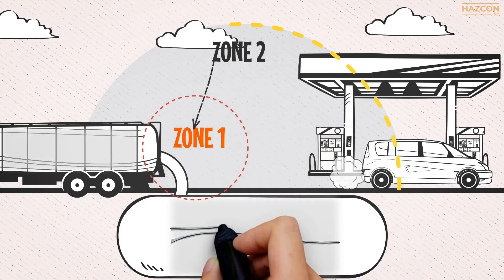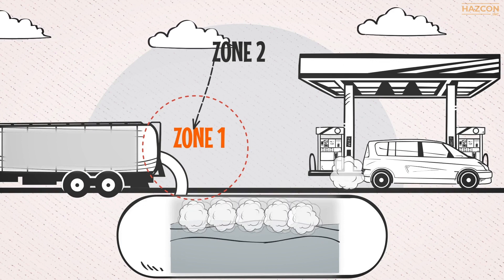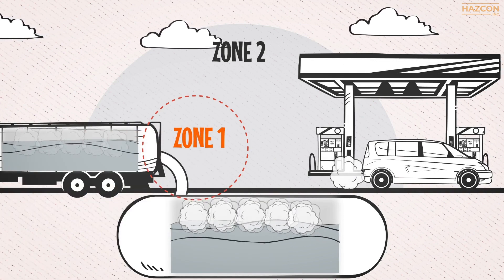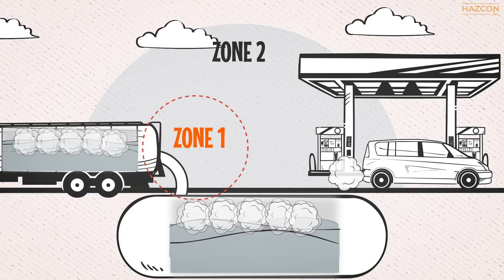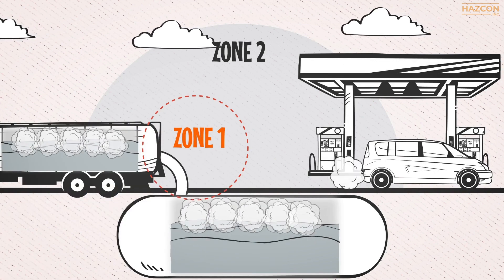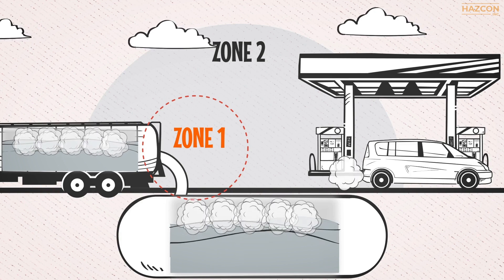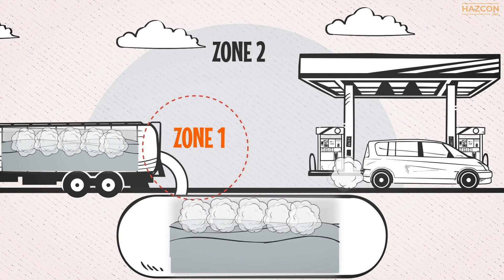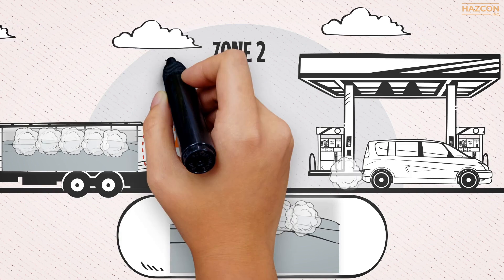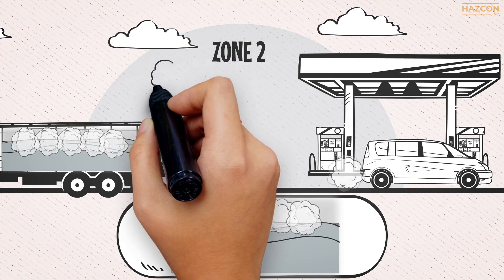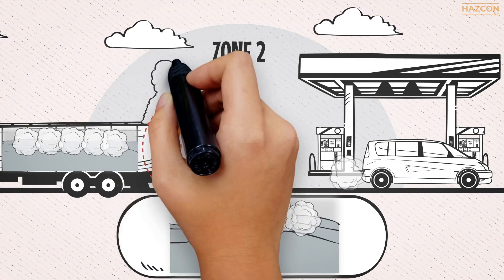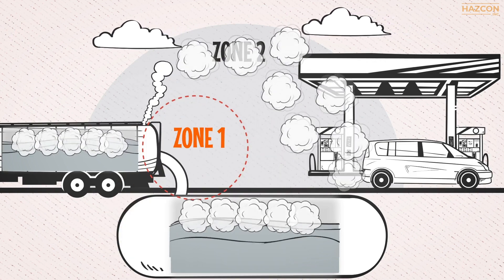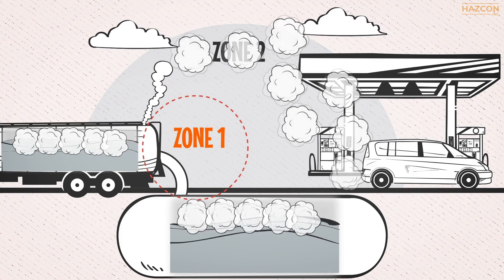In our example of the tank, the area identified as Zone 2 is outside of and immediately adjacent to the Zone 1 area. Under normal operating conditions, there would be no gas present outside the tank. If gas leaks out of the tank due to accidental rupture, repair, or maintenance, however, a hazard exists.